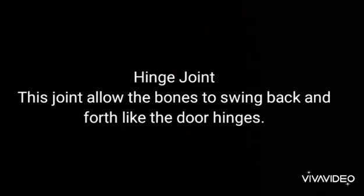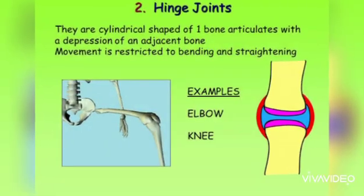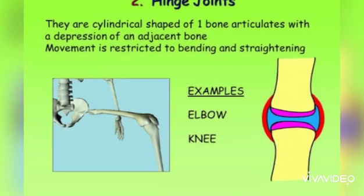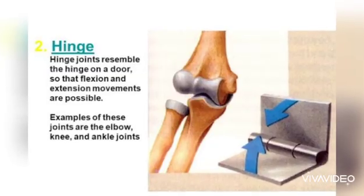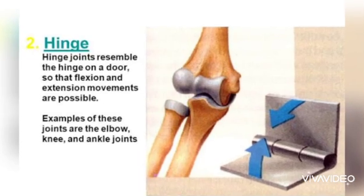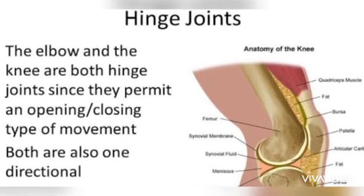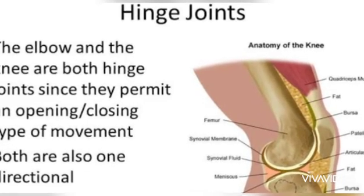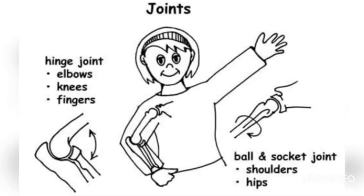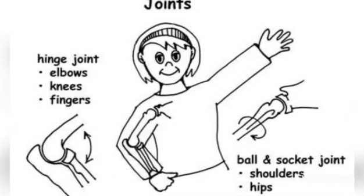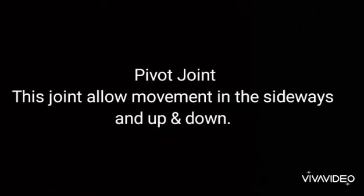Now we will look at the hinge joint. Hinge joints allow the bones to swing back and forth like door hinges — in the same way we move a door, we move the hinge joint. Hinge joints are found in the elbows, knees, and fingers. Ball and socket joints are found in the shoulders and hips.